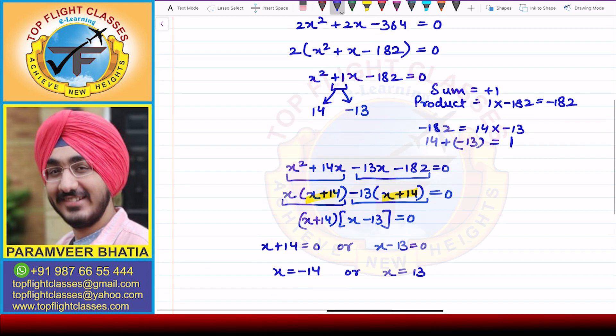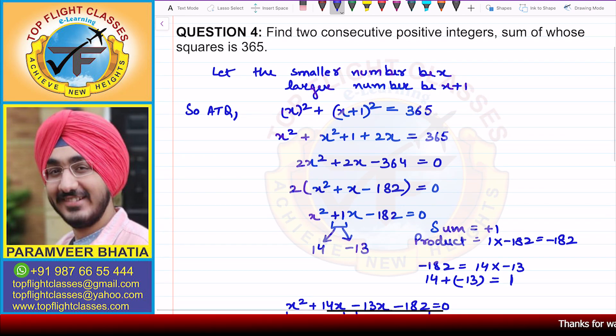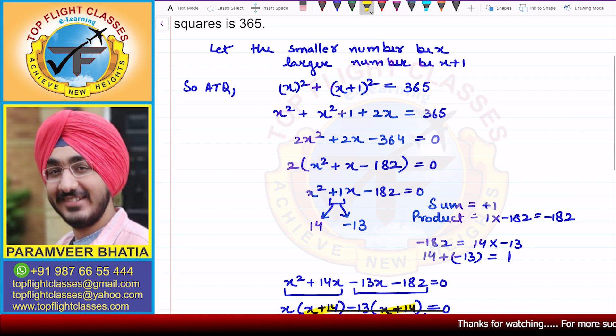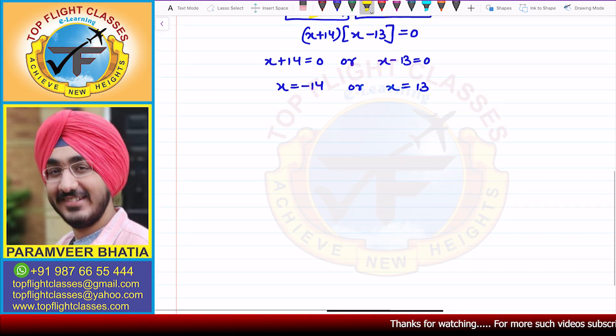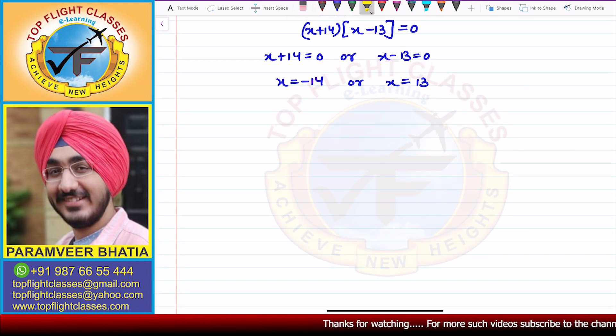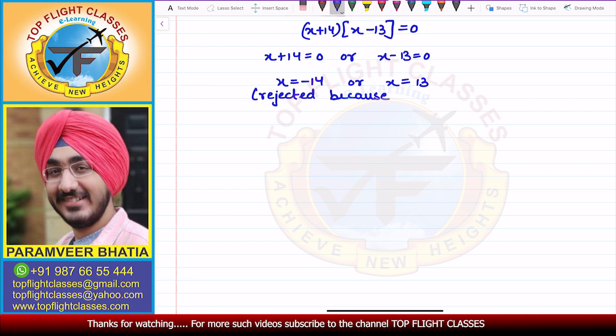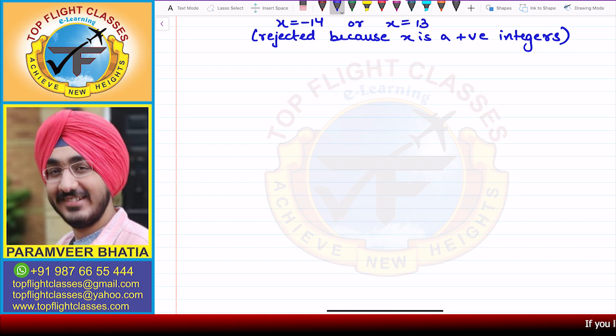Now in the question, he says there are two consecutive positive integers. So if we have positive integers given here, x value is minus 14. So that is not possible. So therefore, this value is rejected because x is a positive integer according to the question. Because in the question, there is a positive integer that x is a positive integer. So this is why minus 14 is not possible. So this is why minus 14, the value we have removed, we will reject.